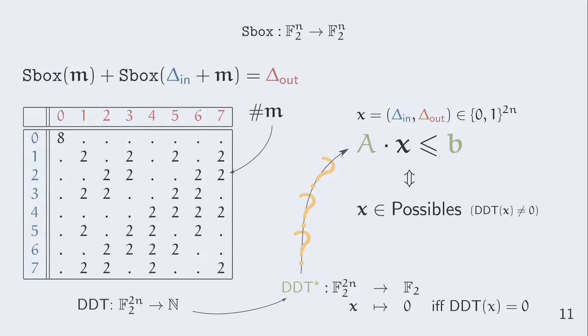This gives us this boolean function called DDT star. For an input difference delta in and an output difference delta out, we say that the transition x, which is the pair delta in delta out, is possible if DDT star of delta in delta out is 1.